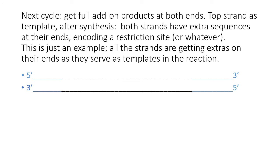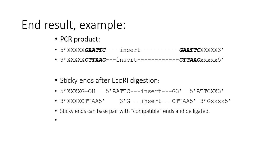We have the full add-on product at both ends, and that's ready to be cut with the restriction enzyme and then cloned. For example, we'd have EcoRI sites at both ends — we've added on our GAATTC. The extra nucleotides (Xs) are there for efficiency of the restriction reaction. We have our insert, which is the double-stranded cDNA formed from the RNA. Cutting with EcoRI forms the 5' sticky ends needed for ligation to a compatible end on a plasmid — presumably an EcoRI-cut plasmid.